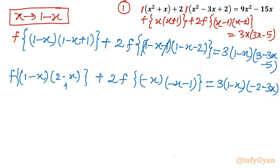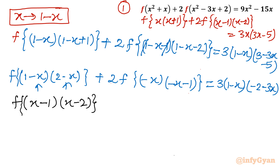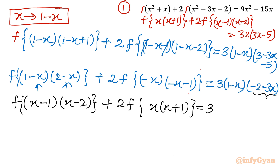Taking minus common from the relevant brackets, I can write everything in (x minus constant) form. So this becomes f of (x-1)(x-2) — minus times minus is plus — plus 2 times f of x(x+1), equal to 3 times. Doing the same on the right side, taking minus common from (-2-3x) gives (x-1)(3x+2). This is equation number 2. Multiplying equation 2 by 2 gives: 2f(x-1)(x-2) plus 4f(x)(x+1) equals 6(x-1)(3x+2).